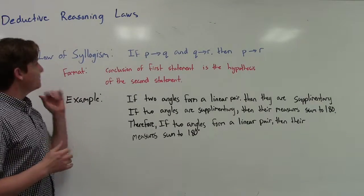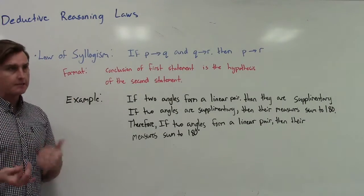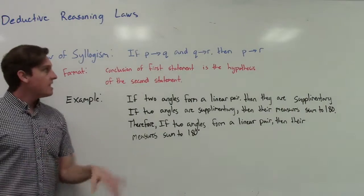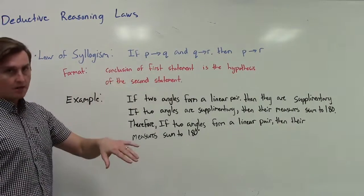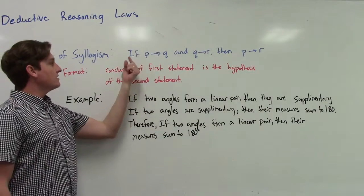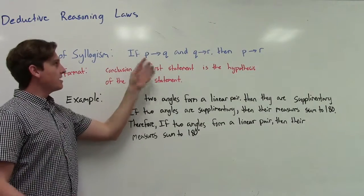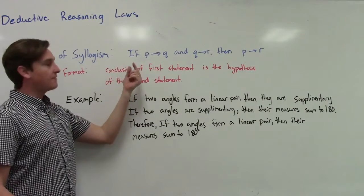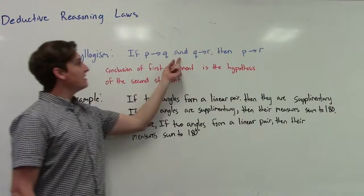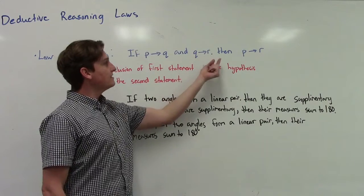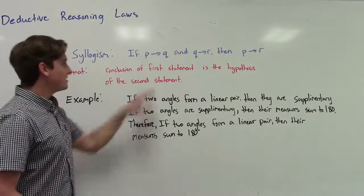Law number two of deductive reasoning is the law of syllogism. The law of syllogism says if p implies q and q implies r, then p implies r. With if-then statements it becomes: if p then q, and if q then r, then if p then r — which is a little bit harder to say, which is why we use 'p implies q' notation.